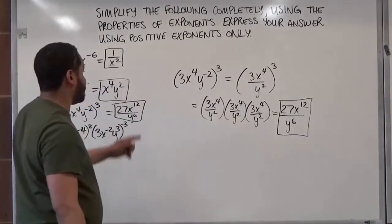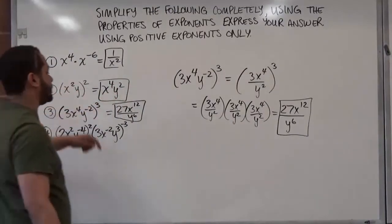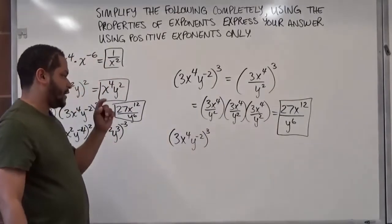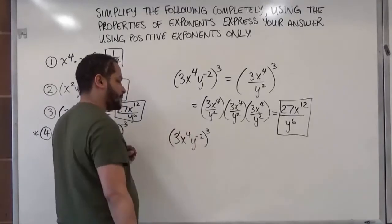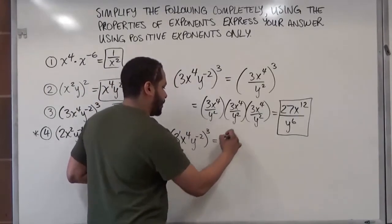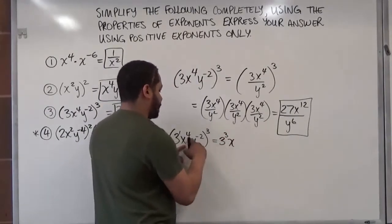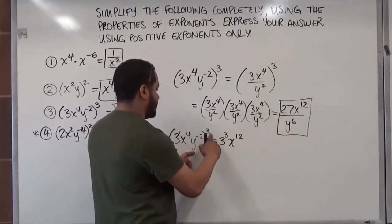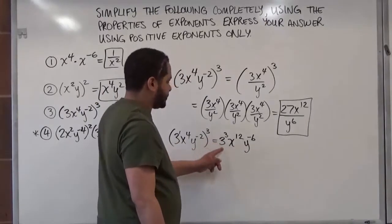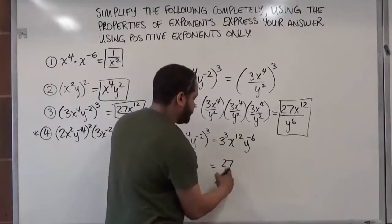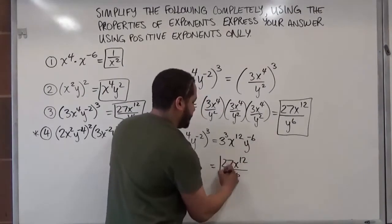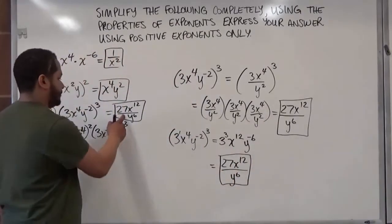Now let's use the properties of exponents for a shorter way. We have 3x to the fourth, y to the negative second, to the power of 3. There's a number in here, so there's an exponent on numbers as well — if you don't see the power, add a power of 1. We distribute the exponent to each term by multiplying: 3 to the first times 3 gives 3 to the third power; x to the fourth times 3 gives x to the twelfth; y to the negative second times 3 gives y to the negative sixth. So 3 to the third is 27, x to the twelfth stays in the numerator, and y to the negative sixth moves to the denominator as y to the sixth. Same solution, a lot easier work.